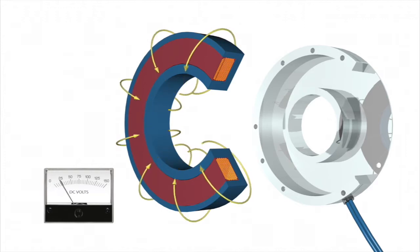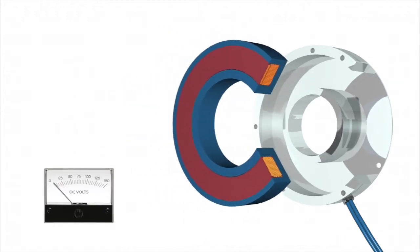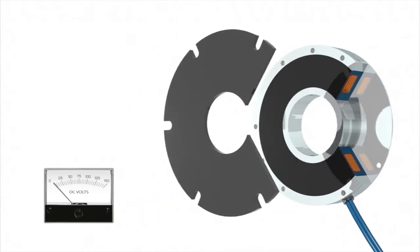When voltage or current is applied to the brake, the coil becomes an electromagnet. This produces magnetic lines of flux.